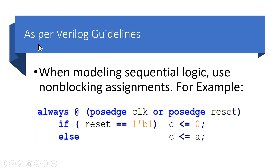As per Verilog design guidelines, one must use non-blocking assignments while modeling sequential logics. For an example, I have shown the code of a D flip-flop wherein I have used non-blocking assignments, and this code is considered to be the correct one. But the question arises: why couldn't we use blocking assignments inside a sequential logic? And this is what we are going to cover in the next part of the video.